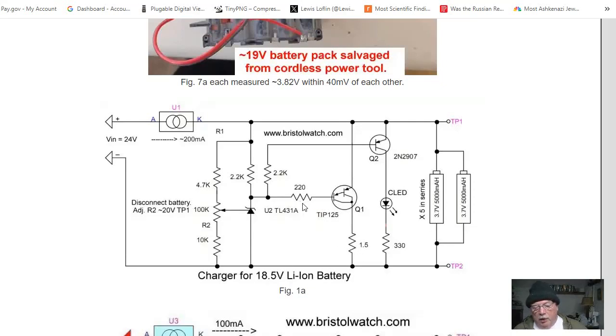First, I put a base resistor in the base of Q1. I increased the Q2 resistor up to 2.2K. That was changed to 2.2K. And this was changed to 330 ohms from 150.